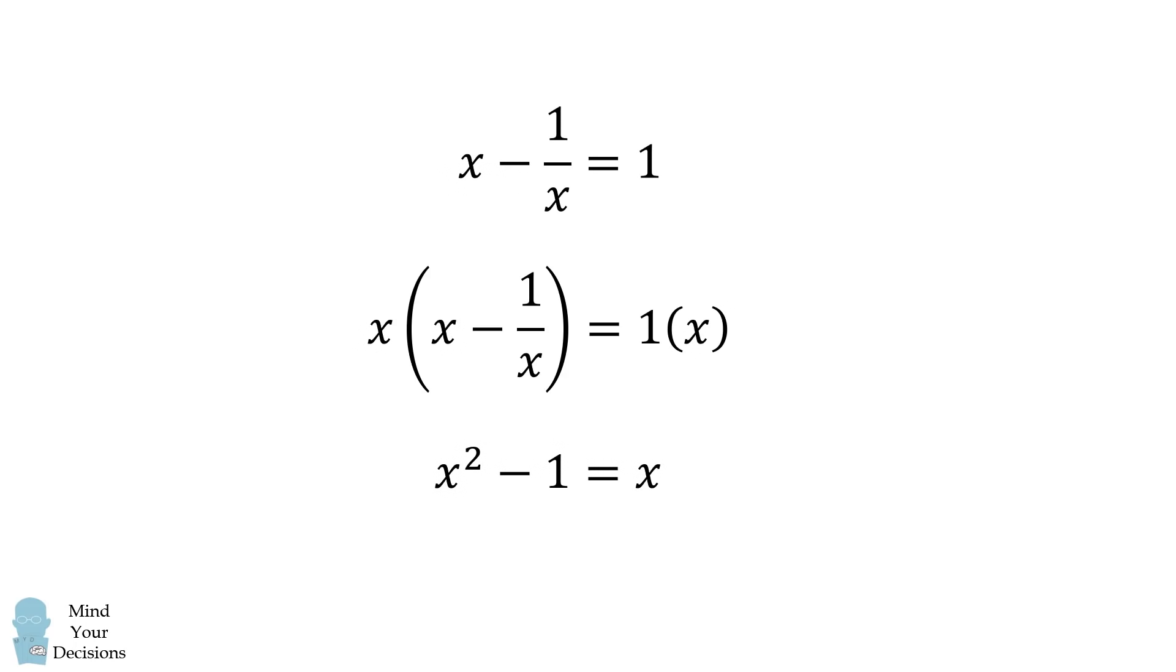This simplifies to be the following quadratic equation. x squared minus 1 is equal to x. This is a standard equation that we can solve using Brahmagupta's quadratic formula. We get two roots.